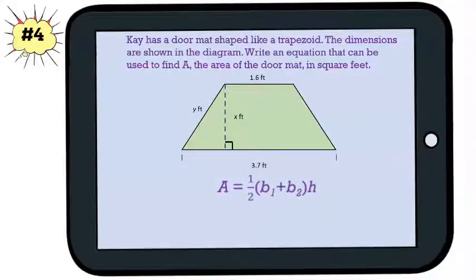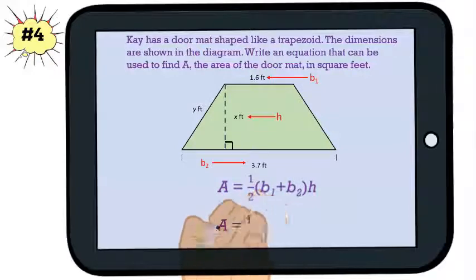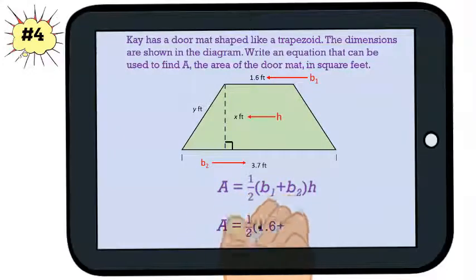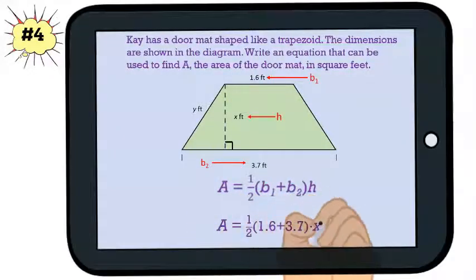Remember, the bases are the two sides of the trapezoid that are parallel to each other. Also remember that the height is measured at a 90 degree angle. All that we need to do is substitute in the values. So we have A = 1/2 × (1.6 + 3.7) × x.